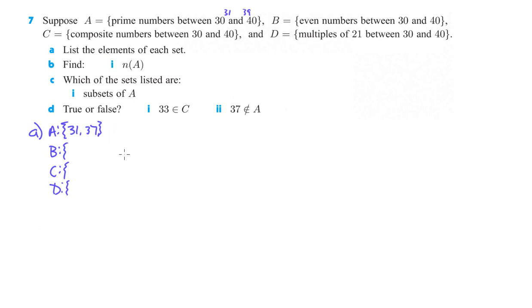For B, even numbers between 30 and 40. So again, we can't start with 30, we've got to start with 31. So we just do all of them between 30 and 40, but not including. So 32, 34, 36, and 38.